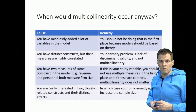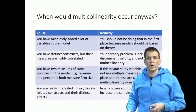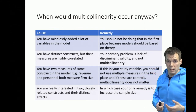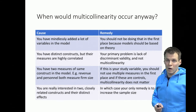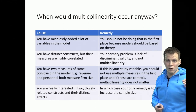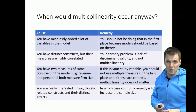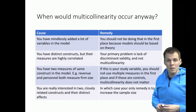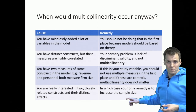The final case is when you are genuinely interested in two closely related constructs and their distinct effects — for example, whether a person's age or tenure influences customer satisfaction scores doctors give to patients, as in Heckman's study. In that case you really cannot drop either one. You can't say that because tenure and age are highly correlated you will omit tenure and assume all correlation between age and customer satisfaction is due to age alone. Instead, you have to increase the sample size so that you can answer your complex research question in a precise manner.